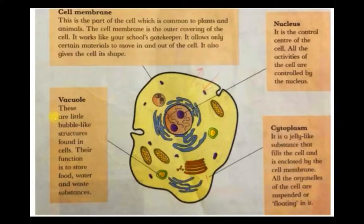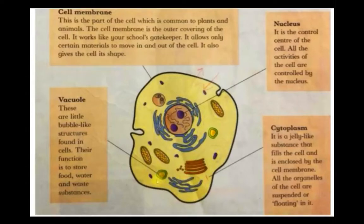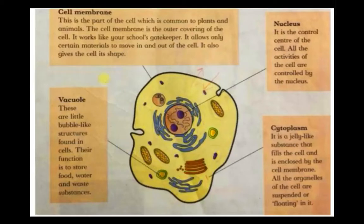Another very important structure of the cell are the vacuoles. These are the little bubble-like structures found in cells — basically the storage sections of the cell. All the food, water and waste substances are stored here. If it is waste material, it is thrown out of the cell through the membrane. If food comes outside the cell, these vacuoles absorb all the food material and provide energy to the cell.